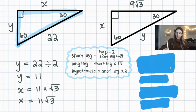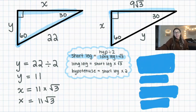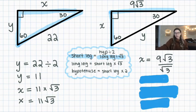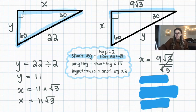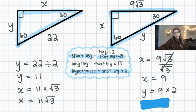In this case, we're given the long leg, which is 9√3. Find the short leg first: x equals the long leg divided by the square root of three, so x equals 9√3 divided by √3. The square roots cancel, giving x equals 9. Then the hypotenuse equals the short leg times two: 9 times 2 equals 18.